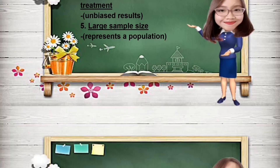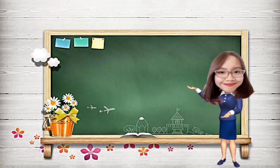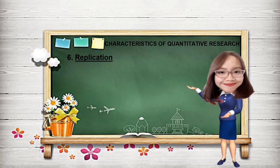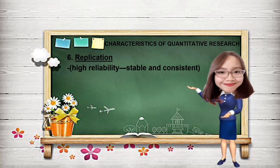Number 6: Replication. Quantitative methods can be repeated to verify findings in another setting, thus strengthening and reinforcing validity of findings and eliminating the possibility of unreliable conclusions.